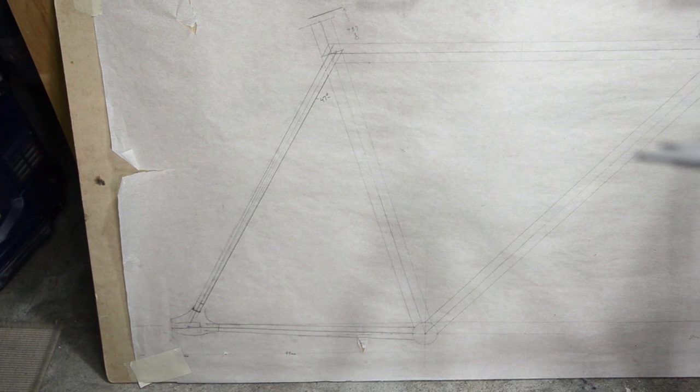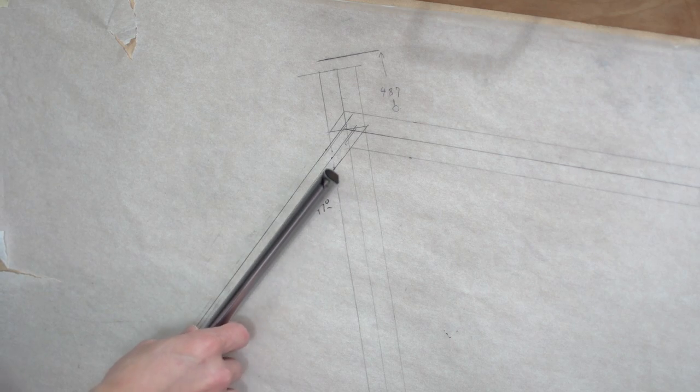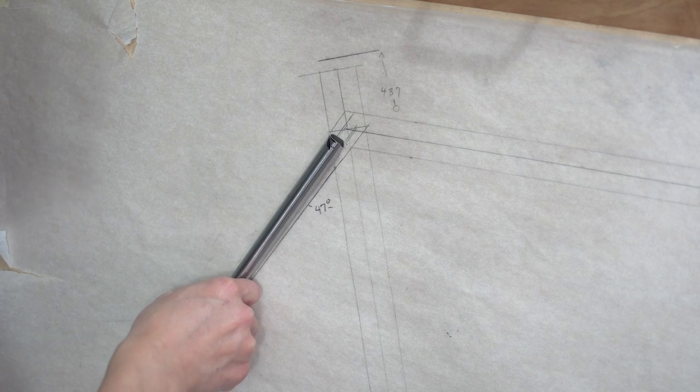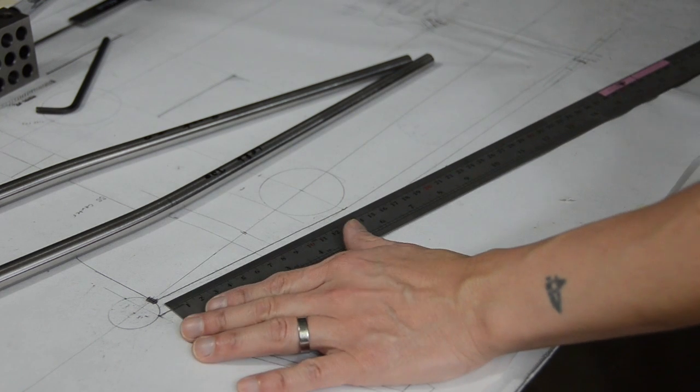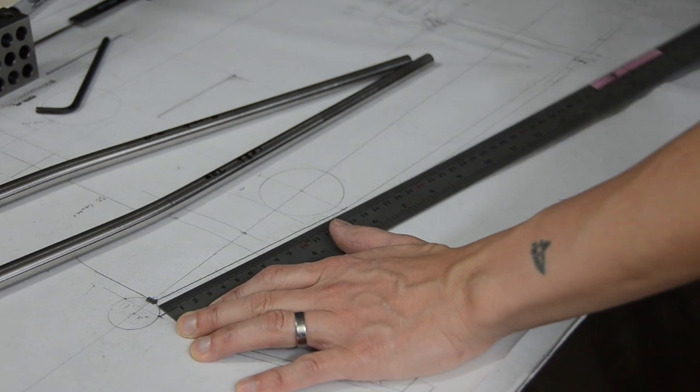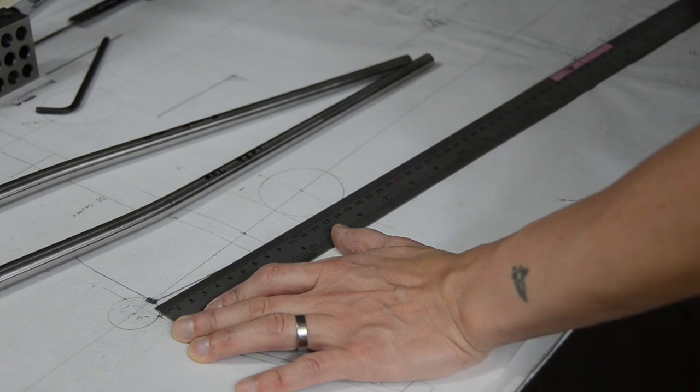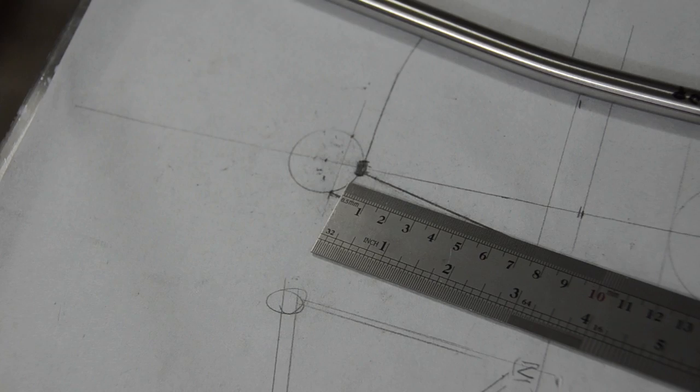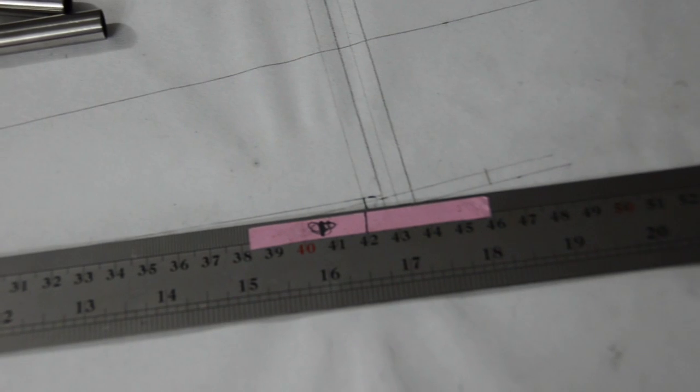And one last check against the side view drawing. Now I need to mark where the miter saw will cut the tube. I'm measuring from where the center of the seat stay contacts the seat tube to the seat stay dropout end. It measures out to 420 millimeters.